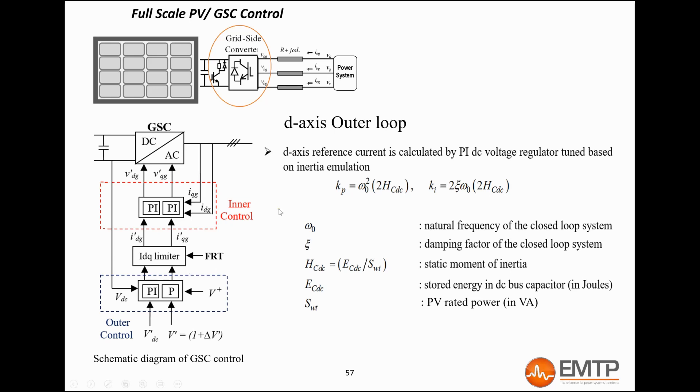The gains of the outer loop PI controller for the D-axis are calculated based on the DC bus capacitance. The equation used is explained here. The DC bus voltage reference, which is the reference of the overall D-axis control loop, is provided by another control scheme.